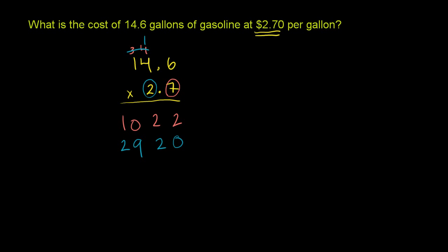And now we can add. And we get 2 plus 0 is 2. 2 plus 2 is 4. 0 plus 9 is 9. 1 plus 2 is 3.